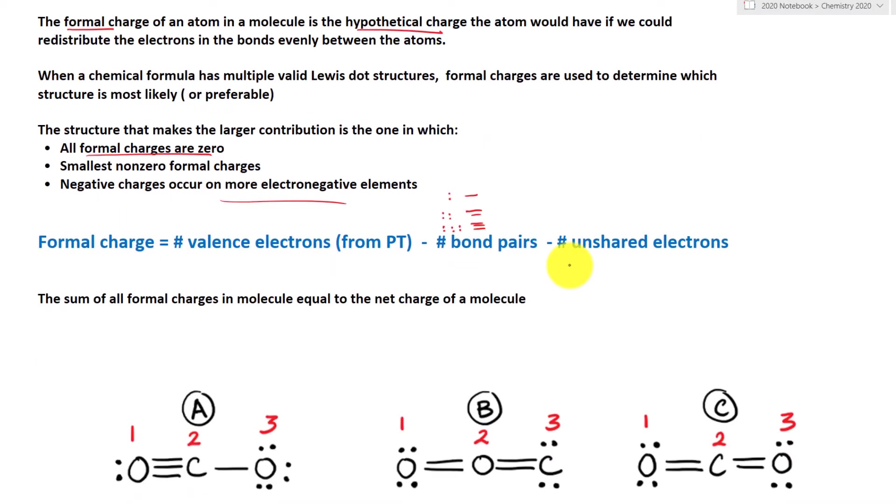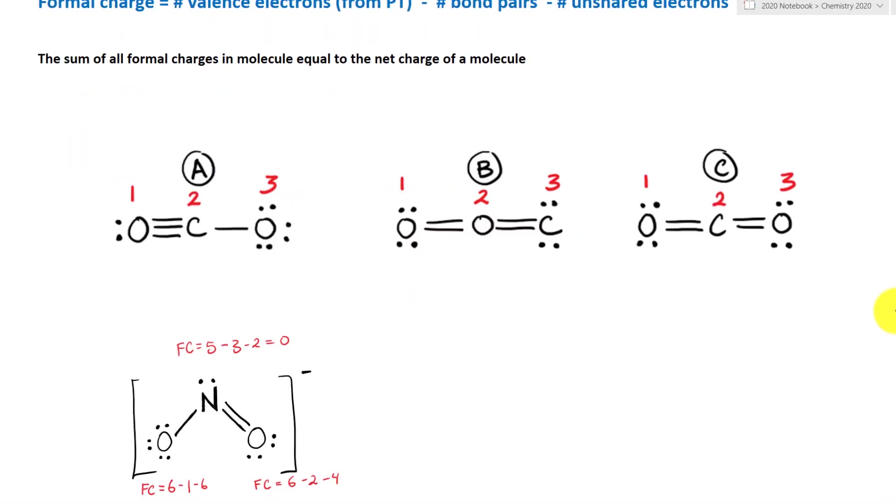And lastly, we also learned about polyatomic ions in the past. And here, we are going to relate to formal charges. And that is the sum of all the formal charges need to equal to the charges of that polyatomic ion. And we are going to look at that example in later part of the video.